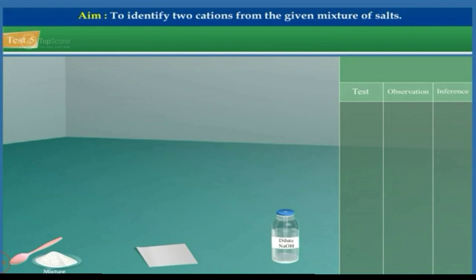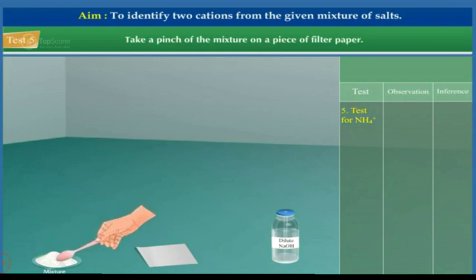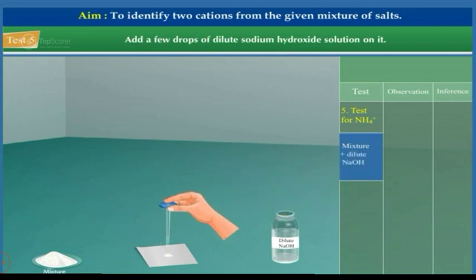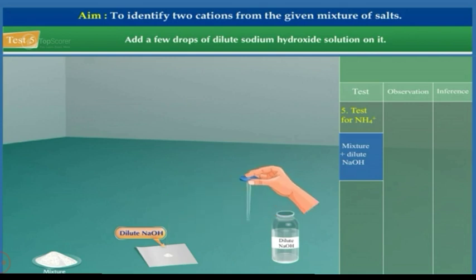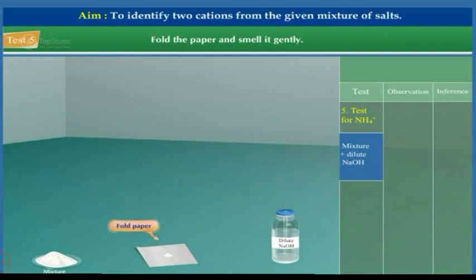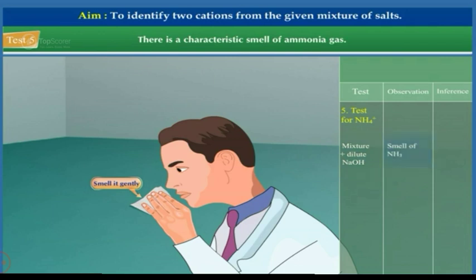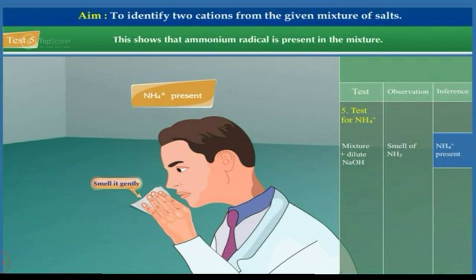Test 5: Test for ammonium radical. Take a pinch of the mixture on a piece of filter paper. Add a few drops of dilute sodium hydroxide solution on it. Fold the paper and smell it gently. If there is a characteristic smell of ammonia gas, ammonium radical is present.